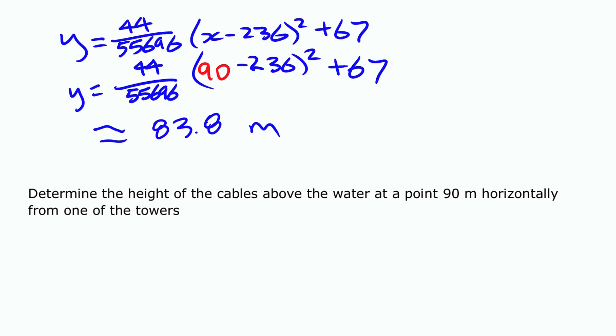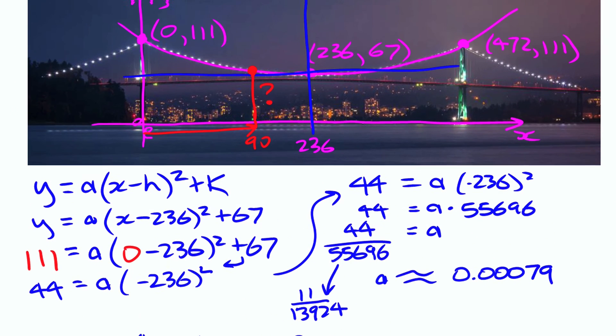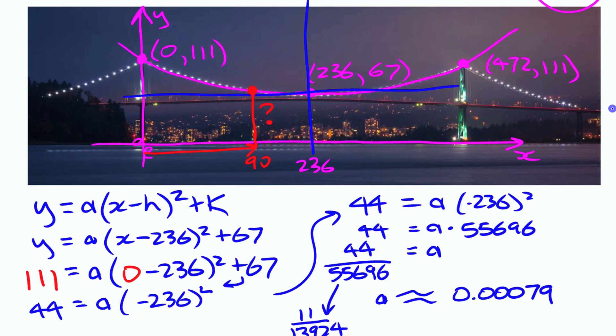All right, so that is writing and using a quadratic function to model the shape of the cables of the Lions Gate Bridge.